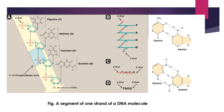This phosphodiester linkage forms the backbone of the DNA and it is a very strong linkage. Remember: thymine equals adenine, and cytosine equals guanine. Thymine and adenine are joined to each other via a double hydrogen bond, while guanine and cytosine are attached to each other via a triple hydrogen bond.